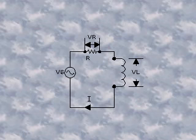The current passing through an inductor lags the voltage by 90 degrees. Thus, there is a phase difference of 90 degrees between the two.